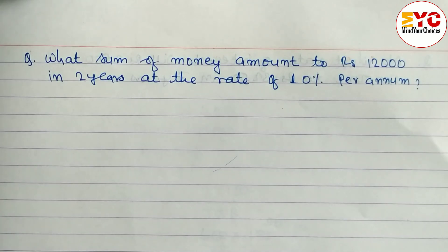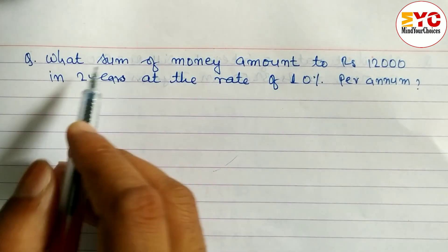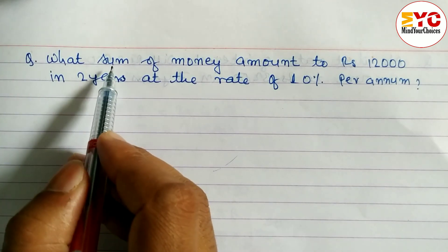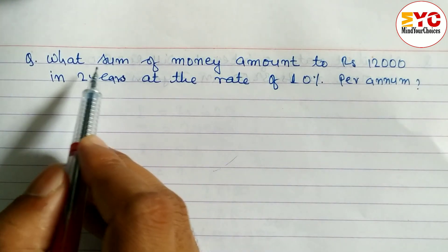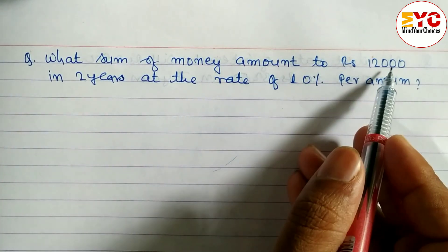We have a question from simple interest. You can see here what sum of money means - definitely you have to think sum means principle. We have to find out the principle amount. Rupees, this amount is given.